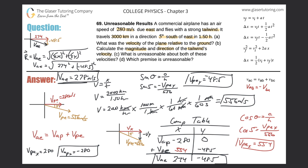The only thing left is to calculate the angle for the direction. I'll use tangent: tan(θ) = opposite/adjacent = 48.5 / 274. So θ = arctan(48.5 / 274), which comes out to about 10.0 degrees. That makes sense — it should be a small angle because X is much larger than the Y value. So the velocity of the air relative to the earth is 278 meters per second at 10.0 degrees south of east.